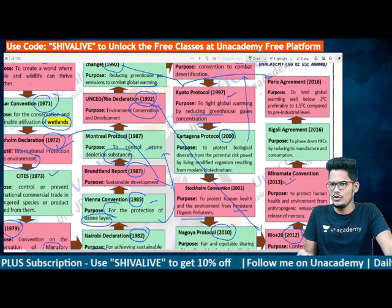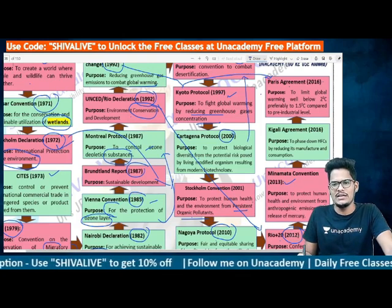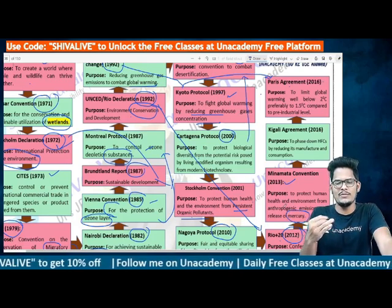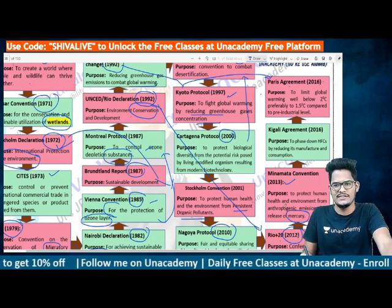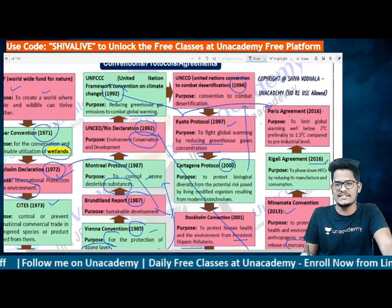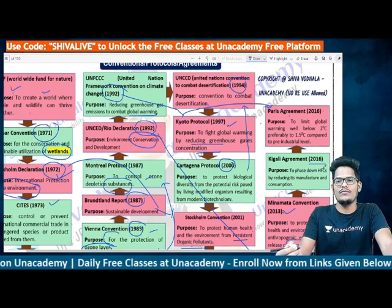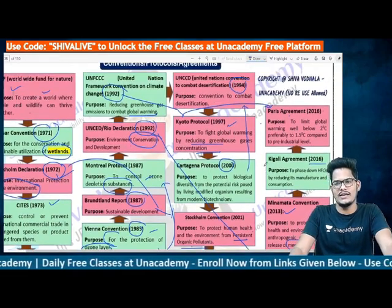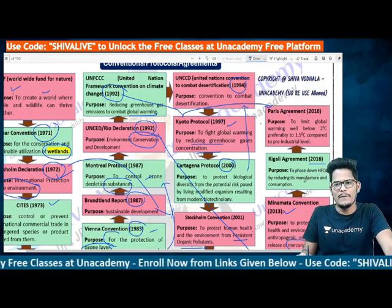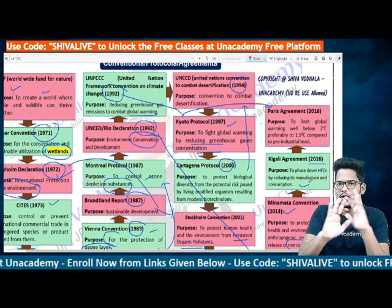The Minamata Convention (2013) aims to protect human health and the environment from anthropogenic emissions and releases of mercury. It is named after Minamata disease from Japan, which was caused by mercury poisoning. The Kigali Agreement (2016) aims to phase down hydrofluorocarbons (HFCs) by reducing their manufacture and consumption — targeting HFCs specifically, not greenhouse gases in general.